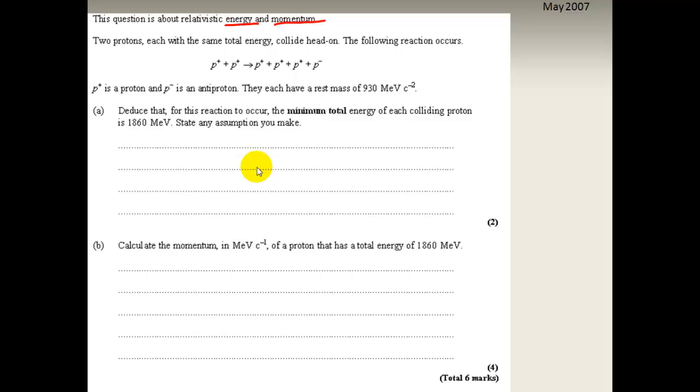Here we have a question about energy and momentum. The question says this is about relativistic energy and momentum, so that gives you a clue. Two protons each with the same total energy collide head on. The following reaction occurs: two protons basically make three protons and one antiproton.